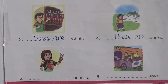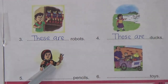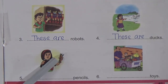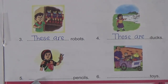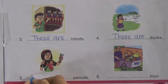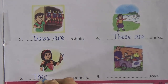Now number five: blank pencils. The girl is holding the pencils and there are more than one pencil. These pencils are near the girl. So what will be there? These are — we will write 'these are'.